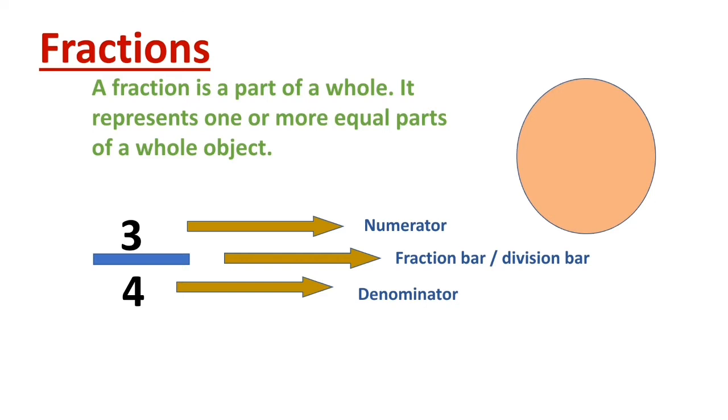Look at the circle. It is divided into 4 equal parts. And from all these parts, 3 parts are blue and one part is orange. Now, this fraction shows 3 quarters of the figure.